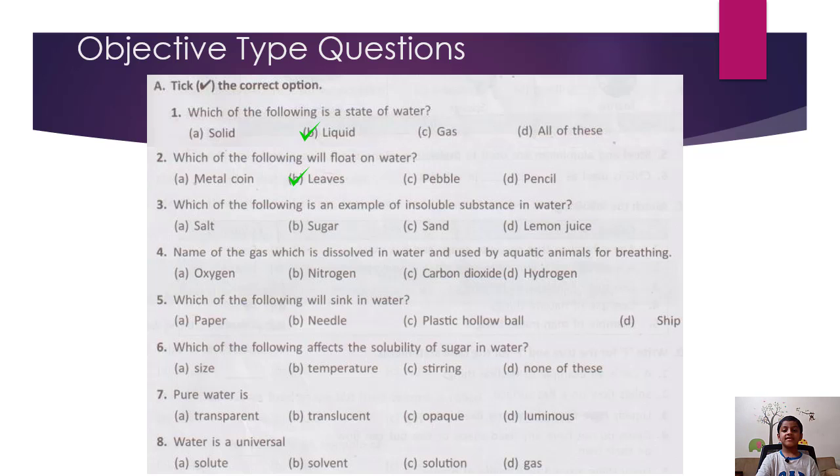Which of the following is an example of an insoluble substance in water? Sand. Name the gas which is dissolved in water and used by aquatic animals for breathing. Oxygen.